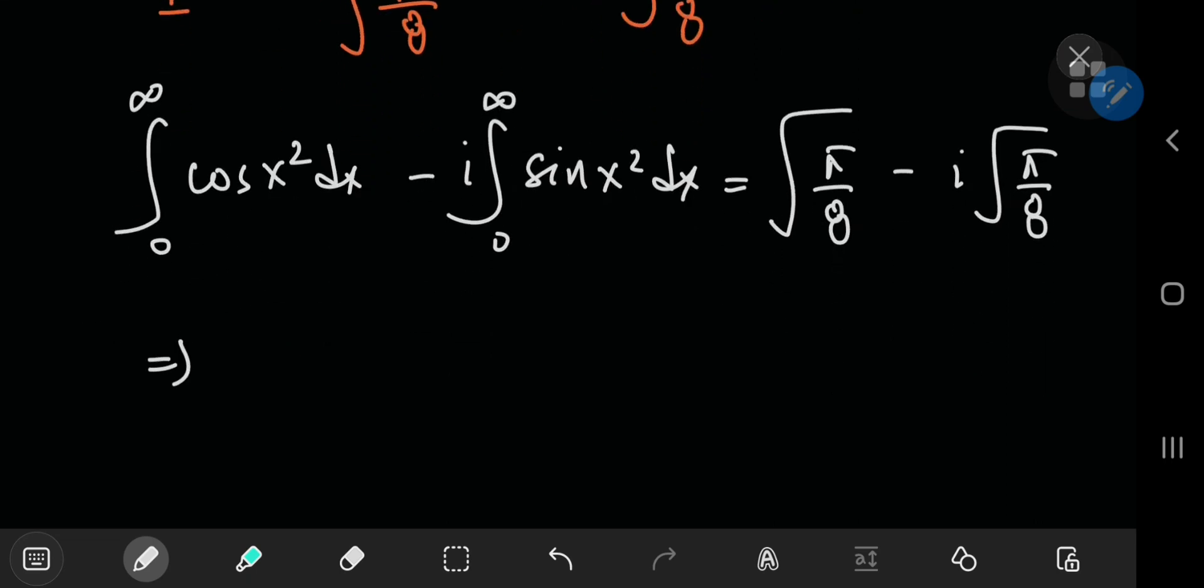Hence, by separating real and imaginary parts, we see that the integral from zero to infinity of cosine of x squared dx equals √π/√8, which also equals the integral from zero to infinity of sine x squared.